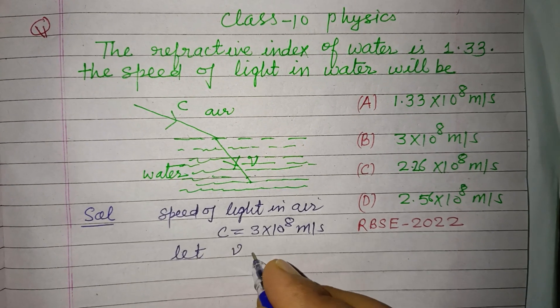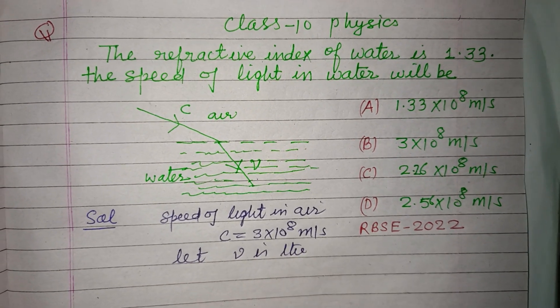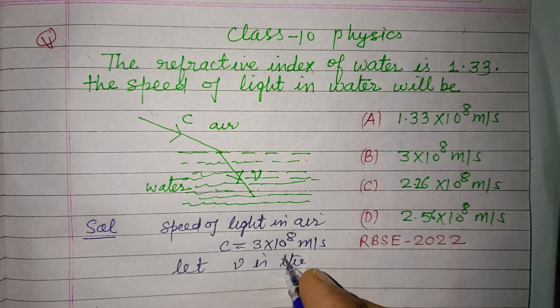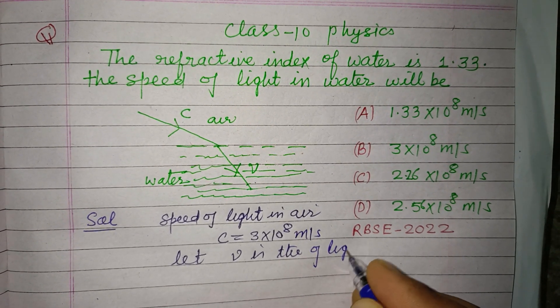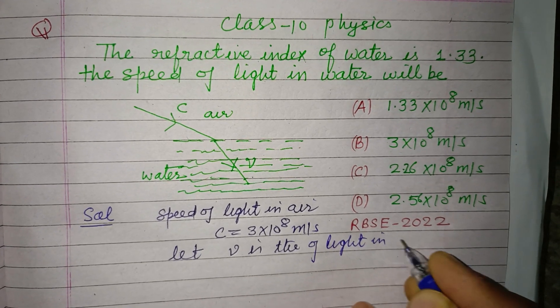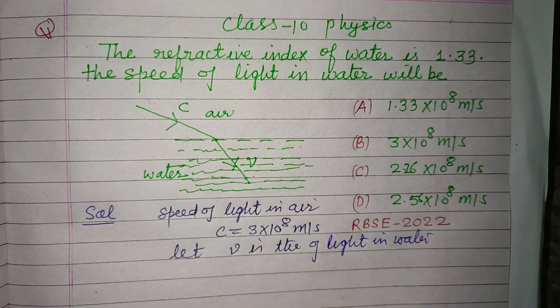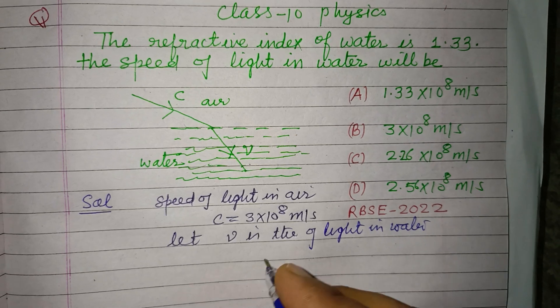Let v be the speed of light in water, and the refractive index of water is given to us.